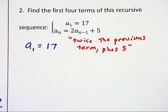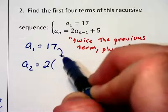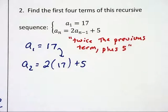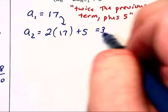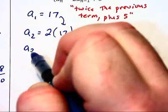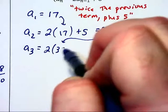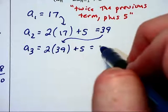So my second term will be 2 times the 17 plus 5. That is 34 plus 5 which gives us 39. The third term will be 2 times that 39 as the previous term plus 5. That is 78 plus 5 which is 83.